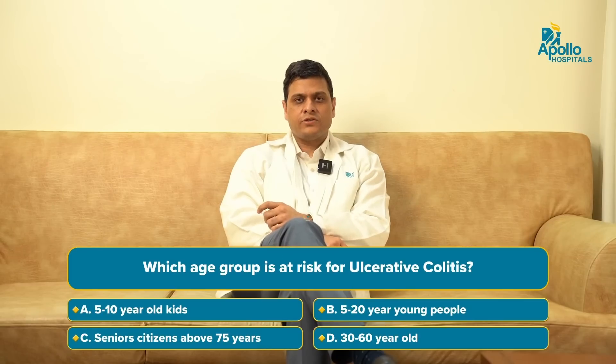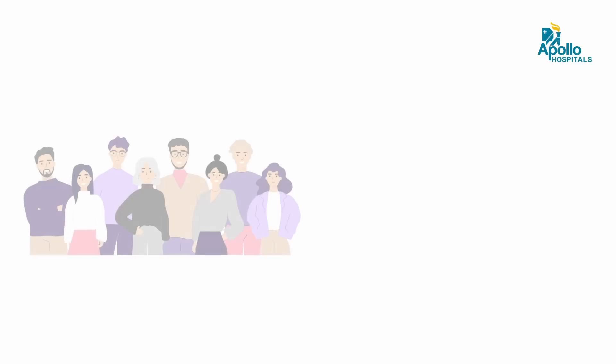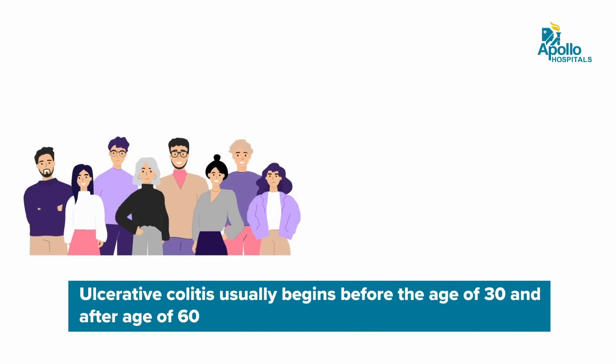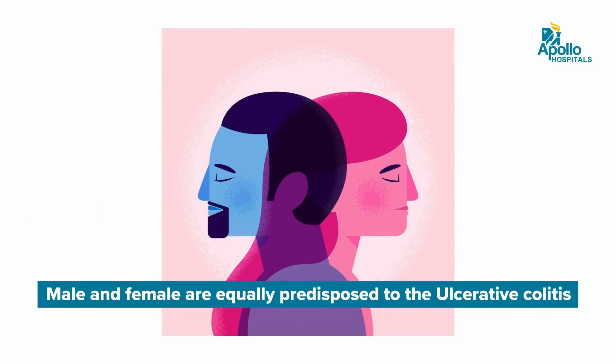Can this be seen in patients of a certain age group and gender? Ulcerative colitis has a bimodal presentation — you can see it in patients in the second to third decade and the sixth to seventh decade of life. These age groups are more predisposed. Regarding gender, males and females are equally predisposed to this disease.